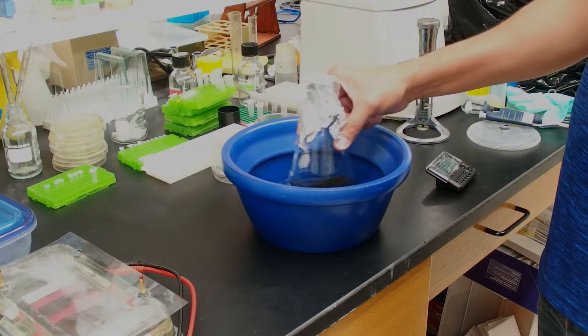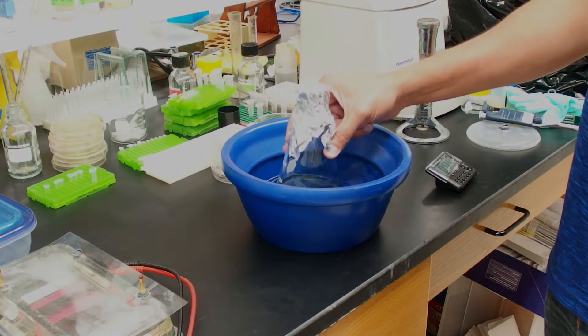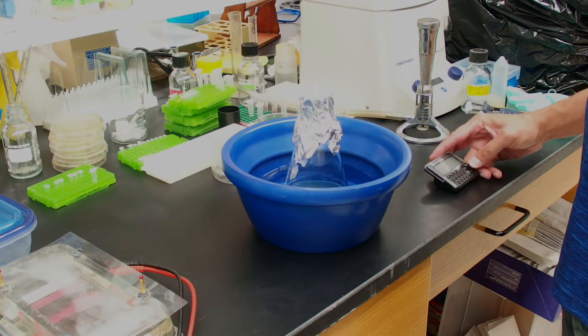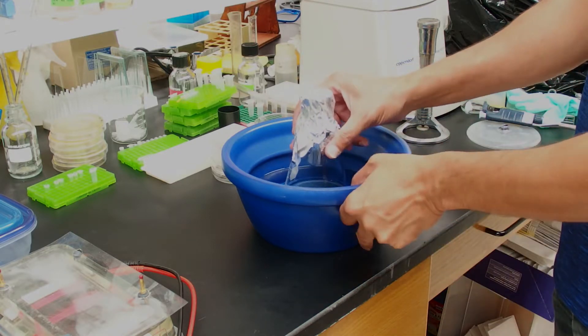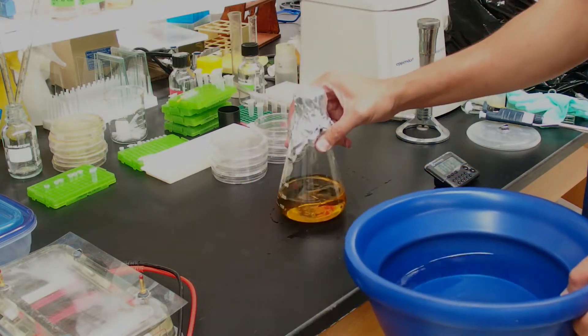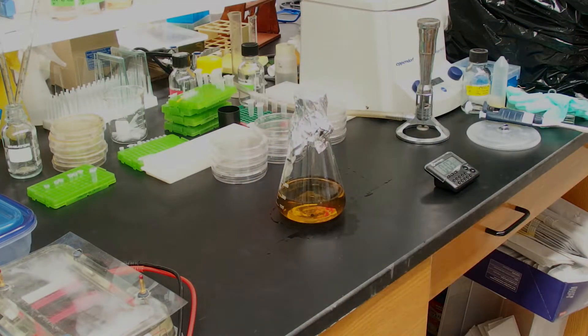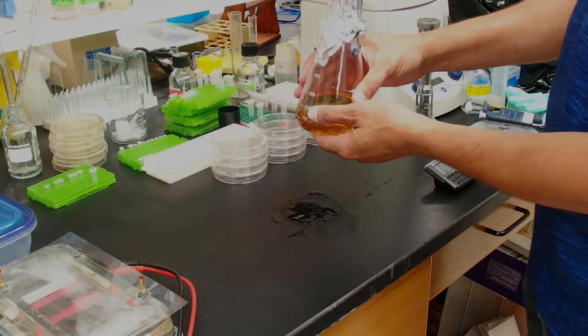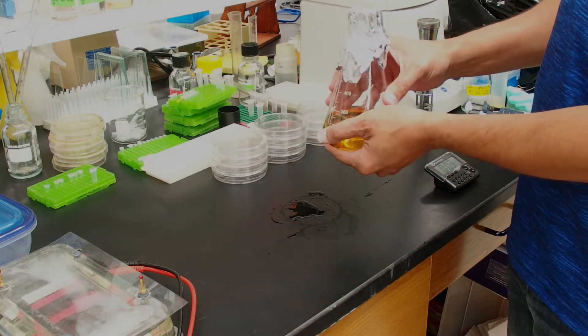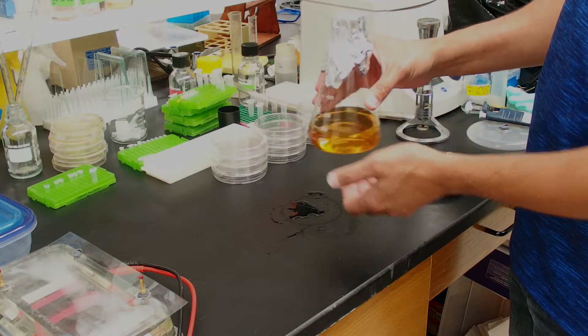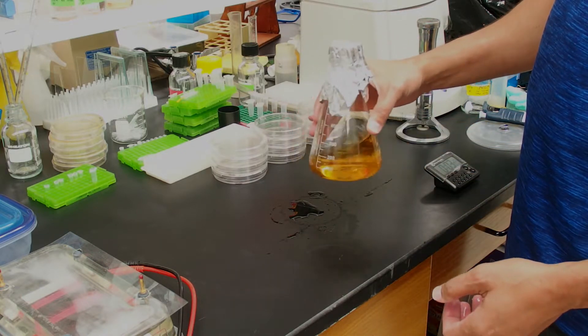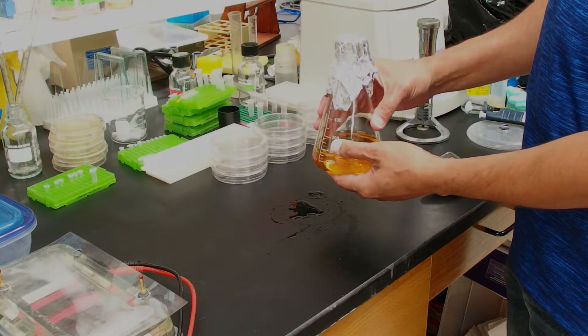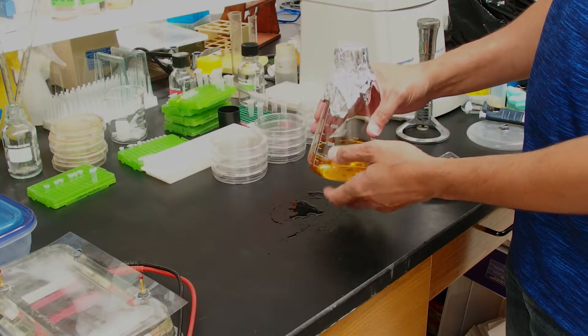You're able to gently swirl your LB agar a couple, two to three times during that three minutes. Our timer is done. At this point, when you feel your LB agar, you should be able to hold it. It should be quite warm so that we don't want it to solidify while it's still in the flask. But it shouldn't be so hot that it burns you.